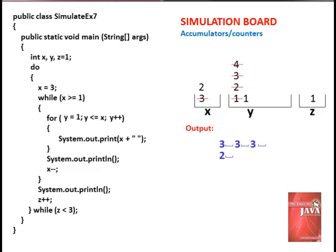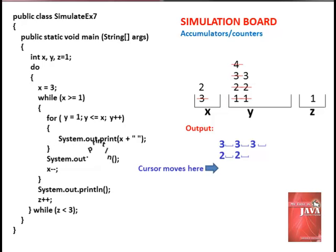Look within the for statement — increment y. Y is now 2. Is 2 less than or equal to 2? True. Print the value of x, which is still 2, with a space after it. Look at the for statement again — increment y. Y is now 3. Is 3 less than or equal to 2? False. Exit the loop block. The cursor advances to the next line by system.out.println. Decrement x — x is now 1.